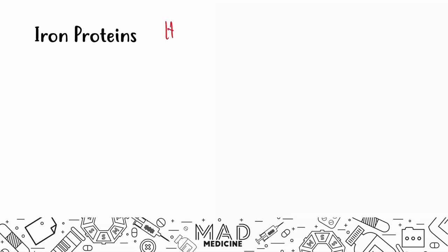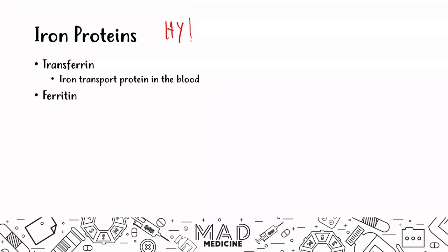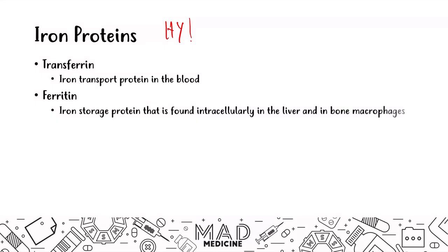You need to know these iron proteins — they are very high yield for Step 1. Transferrin allows for the transport of iron in the blood, taking iron from the blood to the bone marrow and liver macrophages. Ferritin is the iron storage protein found mainly intracellularly, also found in the blood, liver, and bone marrow macrophages.